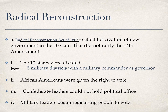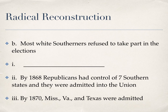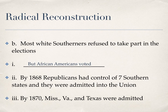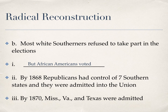White Southerners were really mad — they said if this is how you're going to treat us, then we won't vote. But if you don't go out and vote, you're not going to have a say. White Southerners refused to take part in these elections, but African Americans came out in large numbers to vote because it was something they had never been able to do before. They voted Republicans into office — the people who wanted to give them rights. By 1868, Republicans controlled seven of those 10 states in the military districts, in charge of state legislatures and having voted Republican congressmen and senators into the federal Congress.